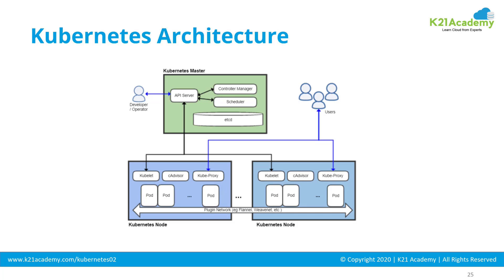The master node processes include API server, controller manager server, scheduler, and etcd. The worker node includes things like pods or agents like kubelet, cAdvisor, or kube-proxy. What are these different components? What is the role of each of these and how do they talk to each other?